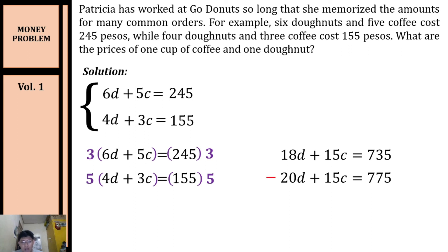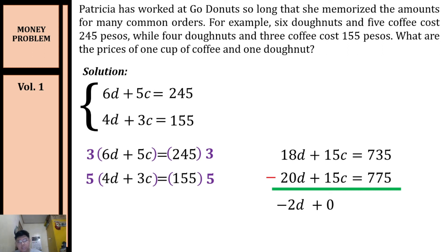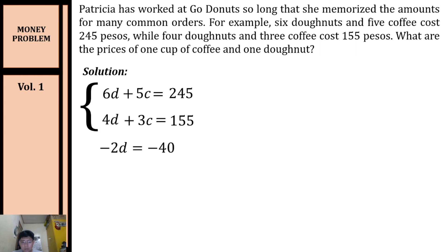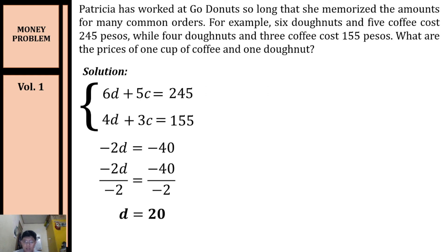Since the coefficients of c are the same, we can eliminate c by subtracting the equations. 18d minus 20d equals negative 2d. 15c minus 15c equals zero. 735 minus 775 equals negative 40. So our equation is: negative 2d = negative 40.